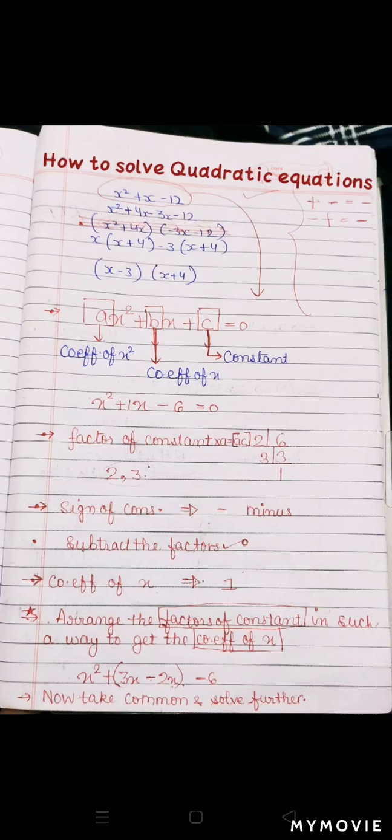Ab iske pehle ek chota sa revision — yeh although humein pehle se hi pata hai ki plus minus, minus minus hote hain; minus plus bhi minus hota hai. Aur jab humare paas same sign ho — agar minus minus toh uska result plus hoga, aur plus plus toh uska result bhi plus hoga.